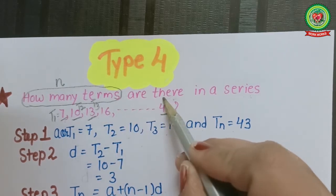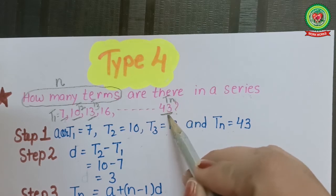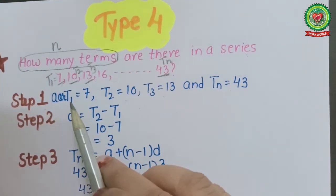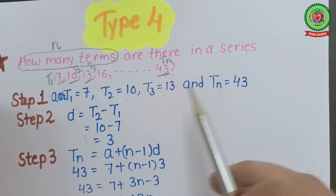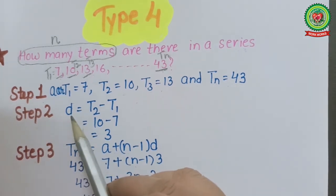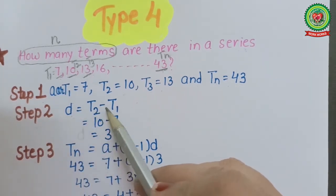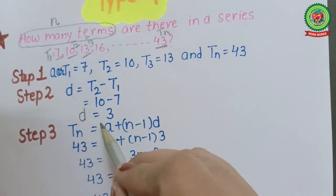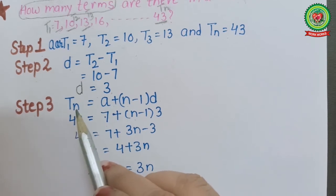Step 1 we will write here. Step 2: the common difference formula is t2 minus t1, so we will get the common difference d = 3.